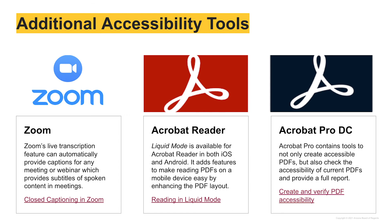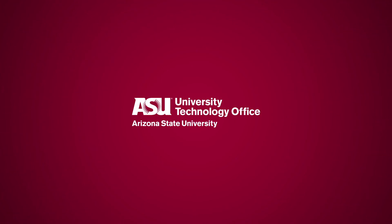Also, feel free to review other technologies such as Zoom, Adobe Reader, and Adobe DC that can assist your students with disabilities further and make them more successful in your class. You have just learned about using the Canvas Accessibility Checker and Ally to improve accessibility in an ASU Canvas course. Please visit our website for more resources and topics at www.SCOE.org. Thank you.